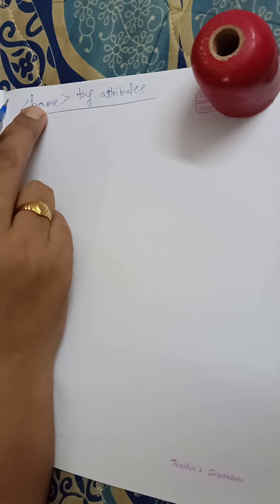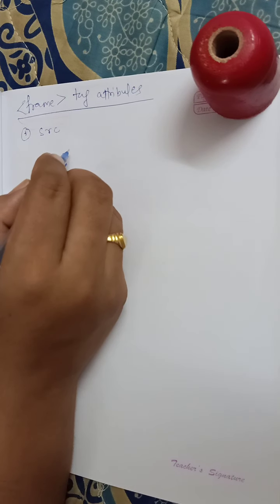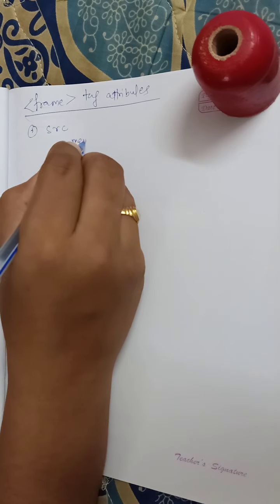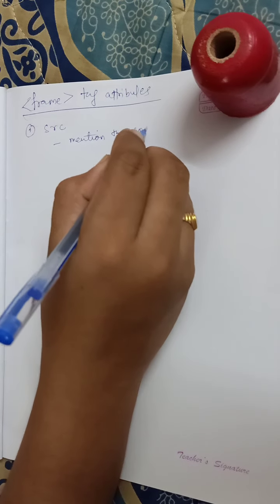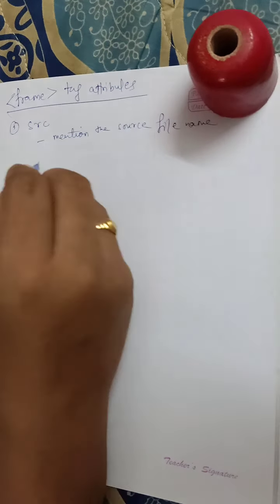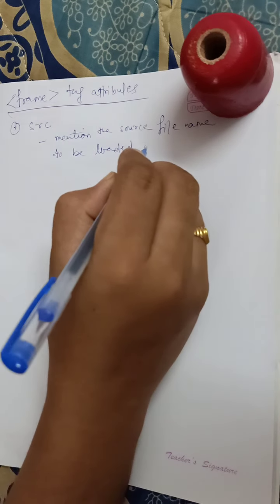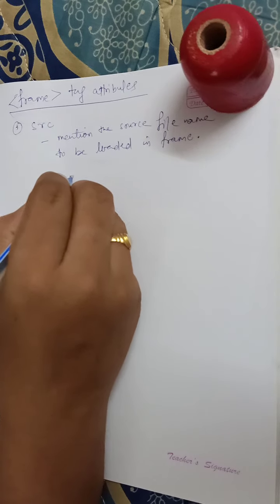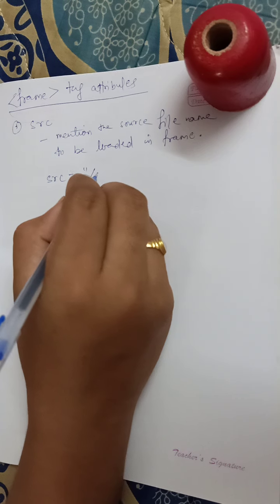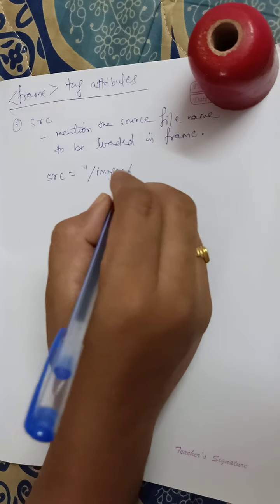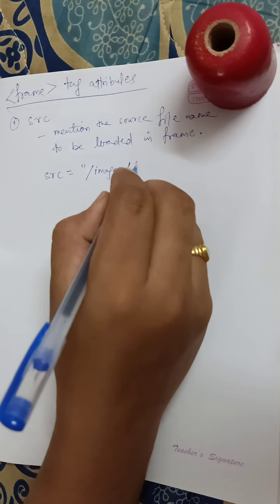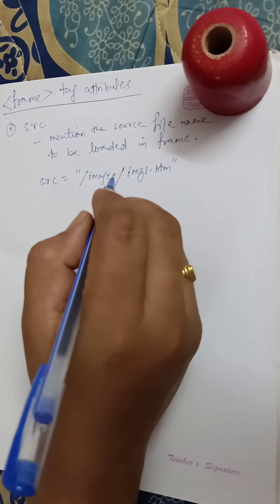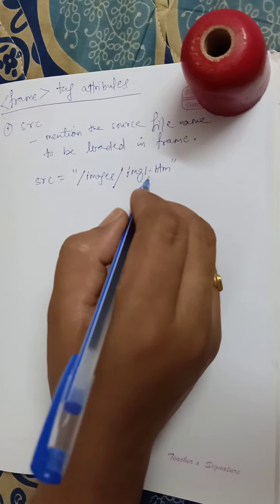Now let's discuss frame tag attributes. The first is 'src', which we have already used. It is used to give the file name that should be loaded — the source file name to be loaded in the frame. Its value can be any URL. For example, I can write src equal to images/img1.html, which will load an HTML file available in the images directory.